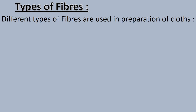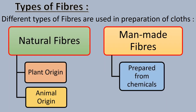Let us now look at the different types of fibers. Different types of fibers are used in the preparation of different clothes. They are natural fibers and man-made fibers. Natural fibers are further divided into two based upon their origin: number one, plant origin; number two, animal origin. Man-made fibers are prepared from chemicals.